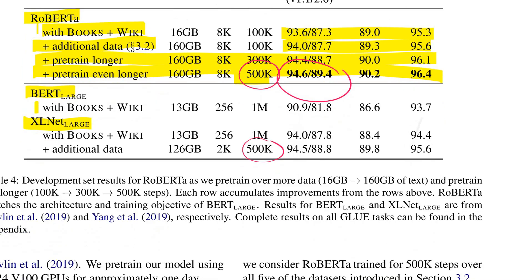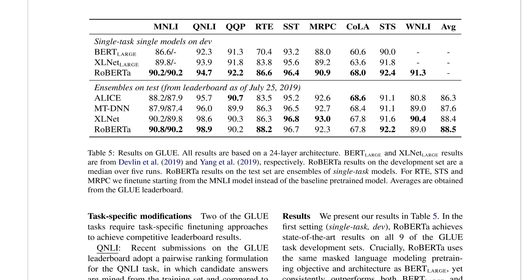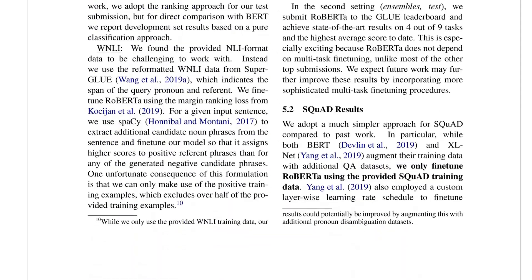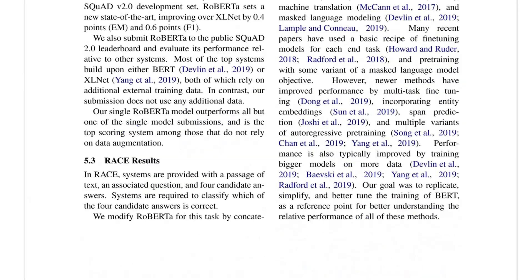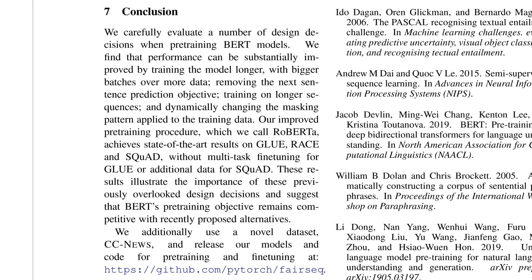They evaluate on other downstream tasks and show that in most of them they can reach or exceed state-of-the-art performance. In conclusion, they argue that the gains other models claim may be questionable — if you simply pre-train BERT in a better way, you can reach the same performance. They also publish their code and data in their repository. Overall a pretty straightforward and impactful paper.